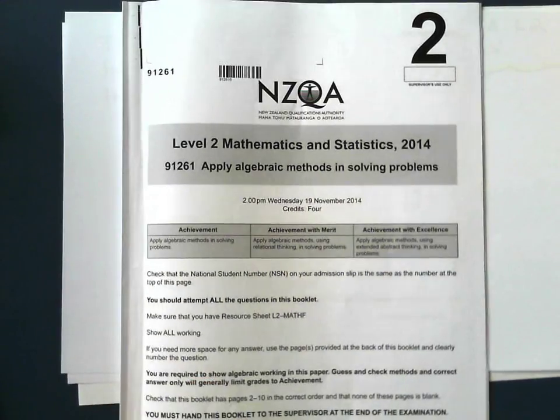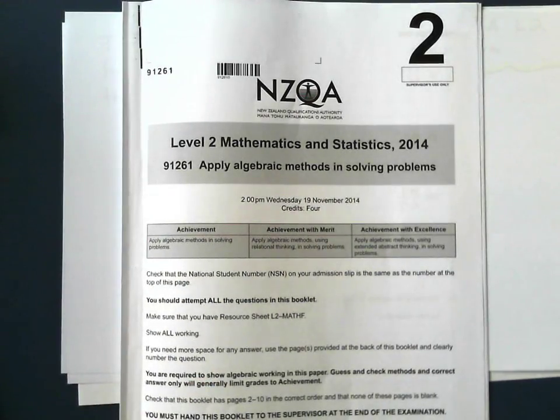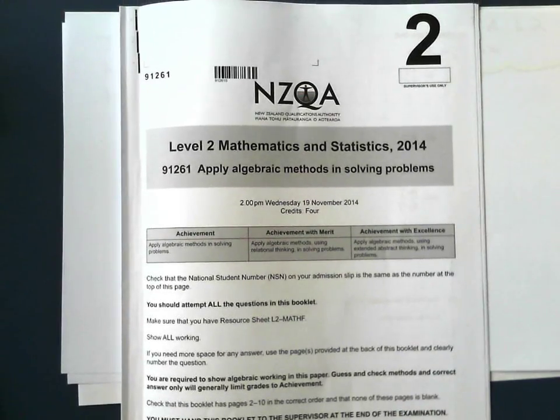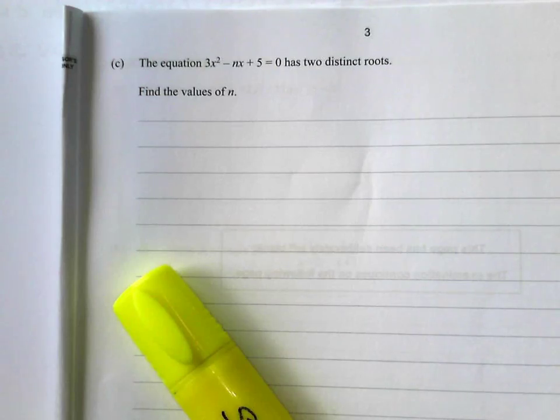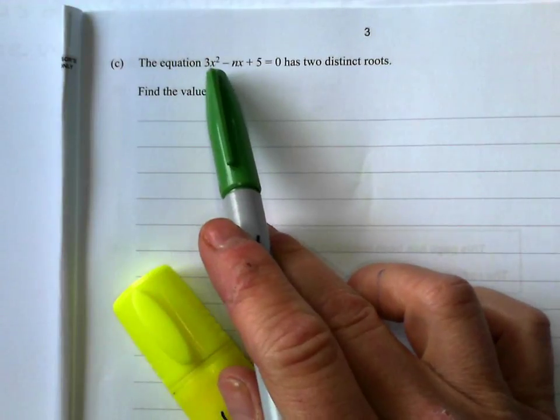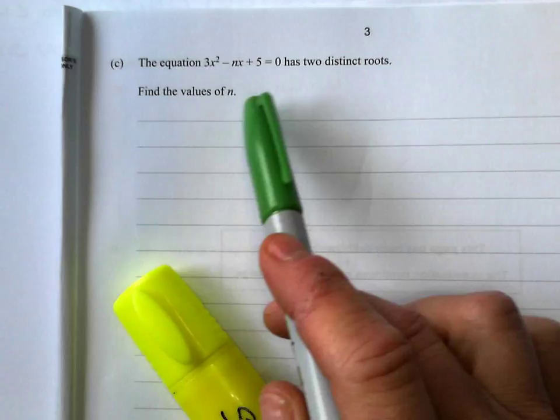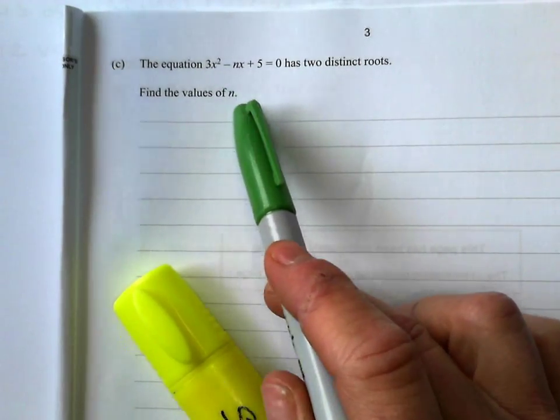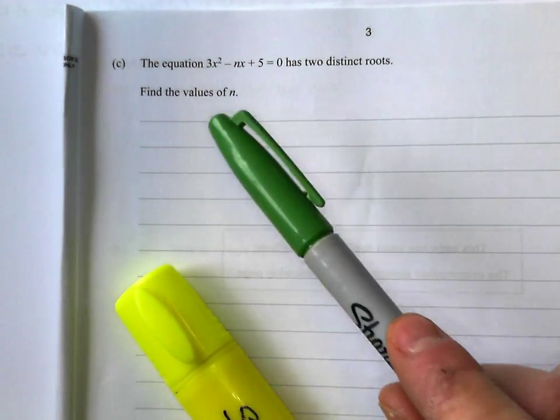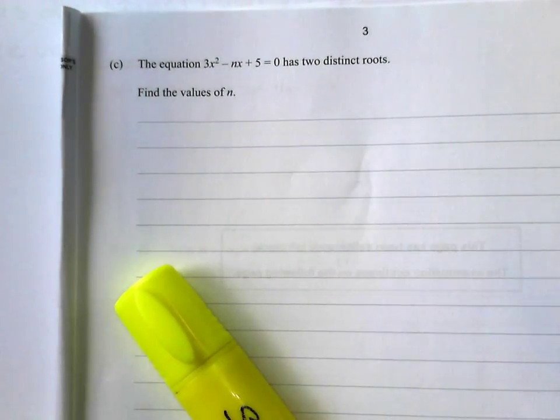So let's look at question 1c right now from this year's exam in Algebra. Okay, question 1c reads, the equation 3x² minus nx plus 5 equals 0 has two distinct roots. Let's find the values of n, pretty similar to the previous problem that I just did, so let's work this one out.